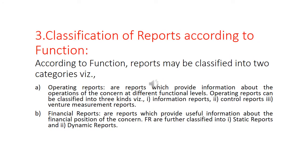The third classification is according to function. According to function, reports can be classified into two categories: operating reports and financial reports. Operating reports provide information about the operations of the concern at different functional levels and are classified into information reports, control reports, and business measurement reports. Financial reports provide useful information about the financial position of the concern, and include static reports, which remain constant, and dynamic reports, which can be changed as per management requirements.